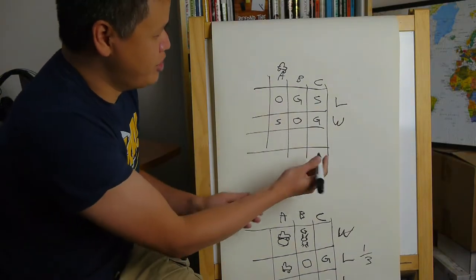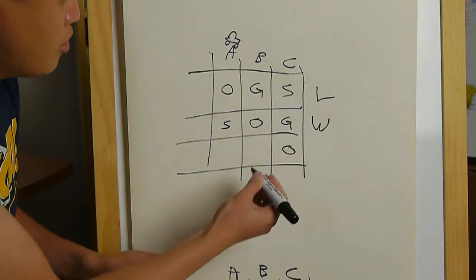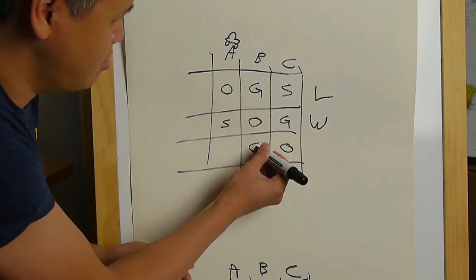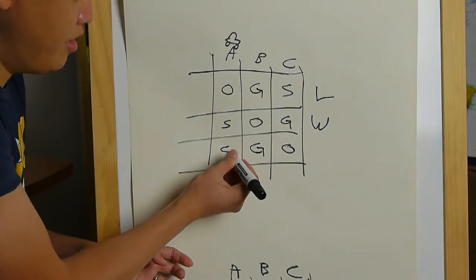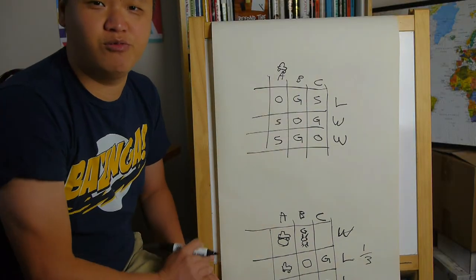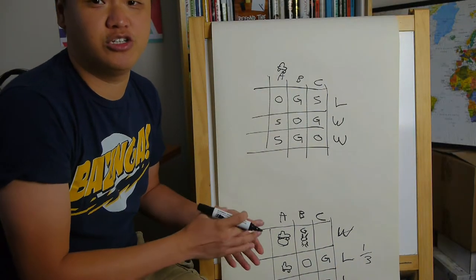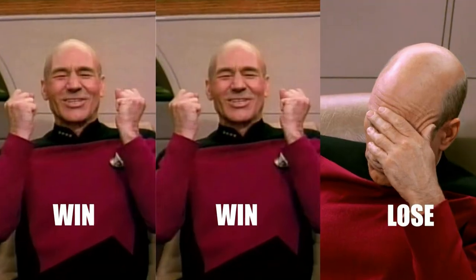So for the third iteration, we pick C. Monty Hall reveals. There's a goat behind B. We switch over to A. And we win. So under this scenario, where you decide to switch to the other door every time, you actually win two out of every three times.